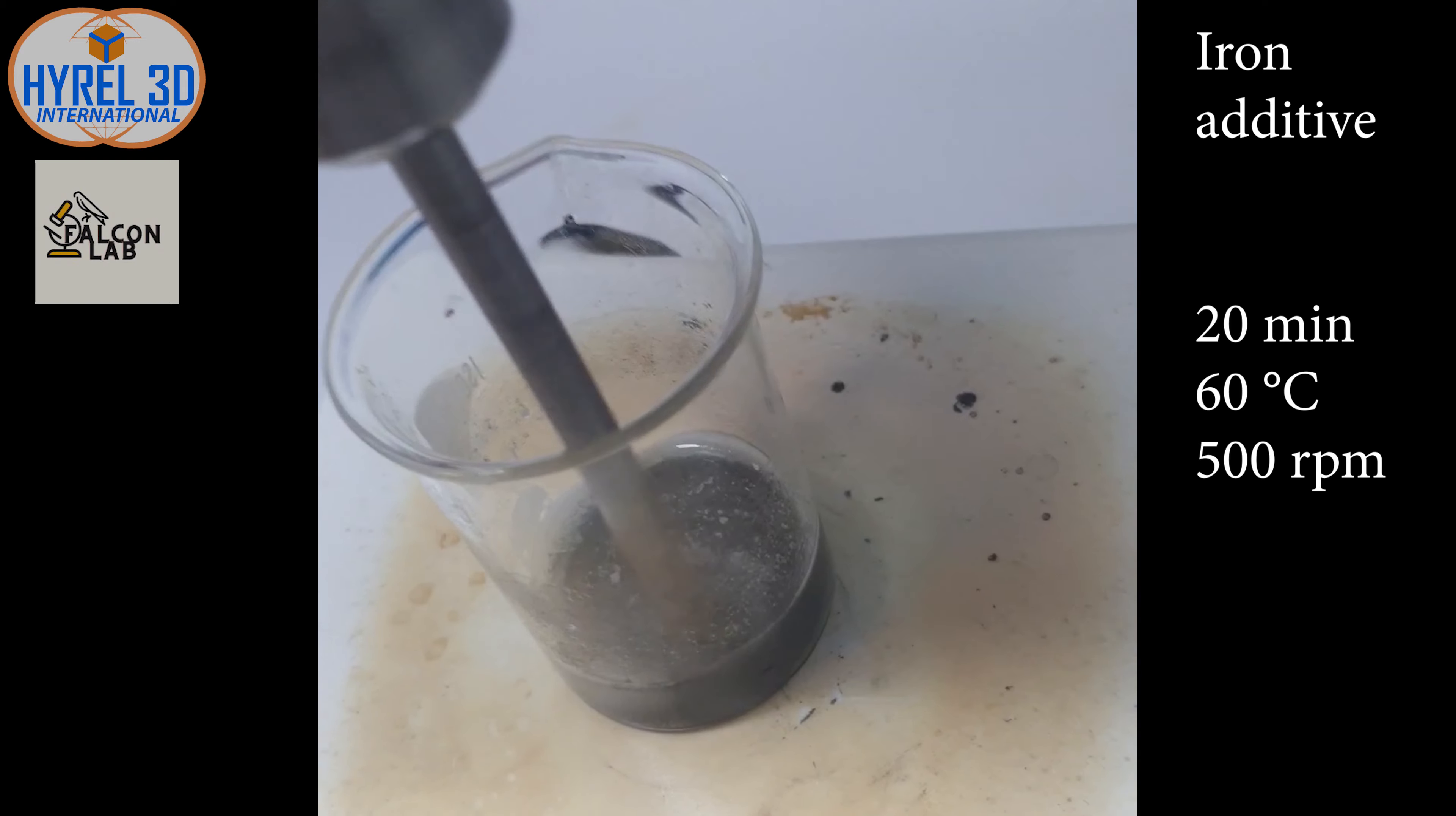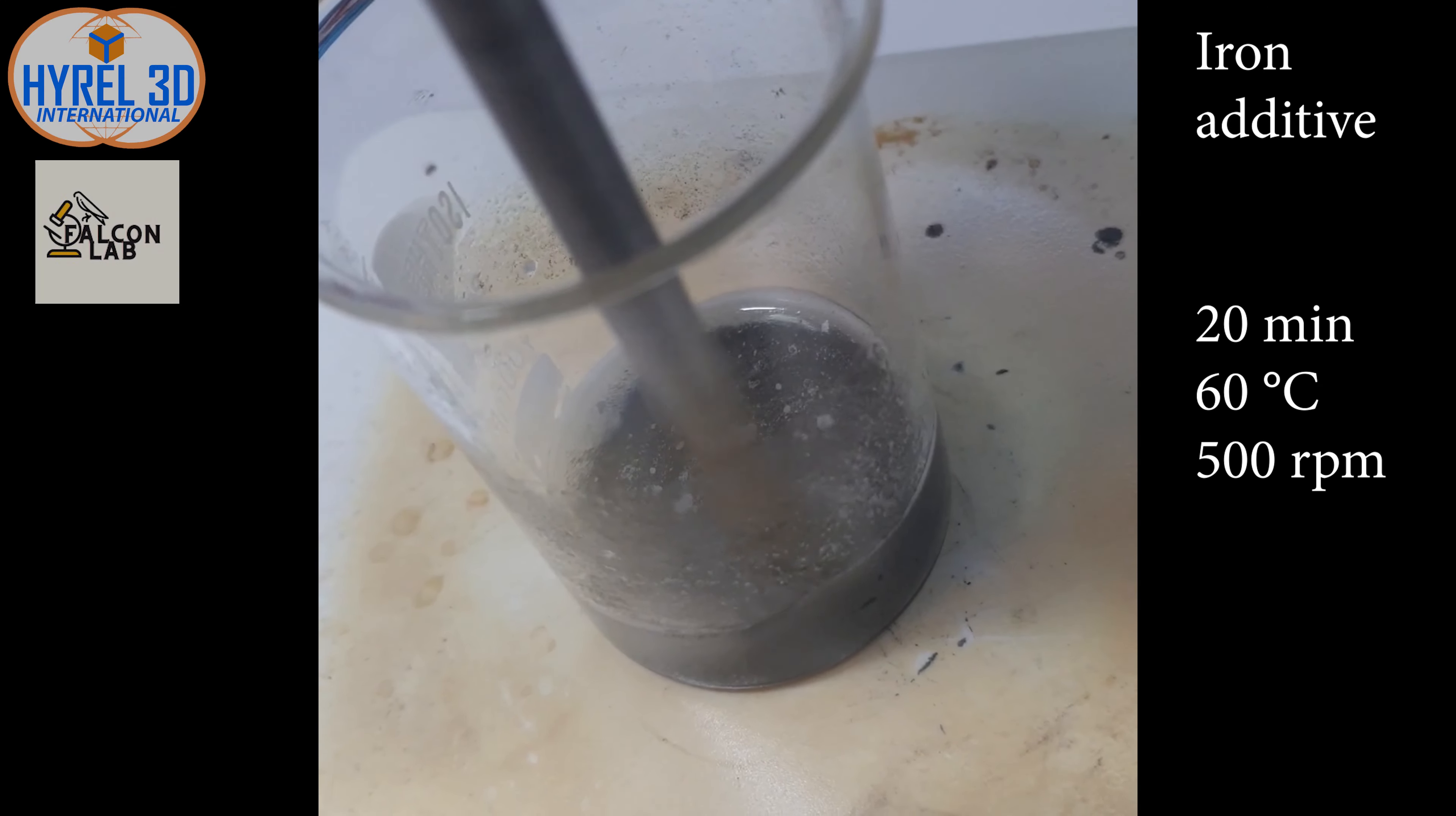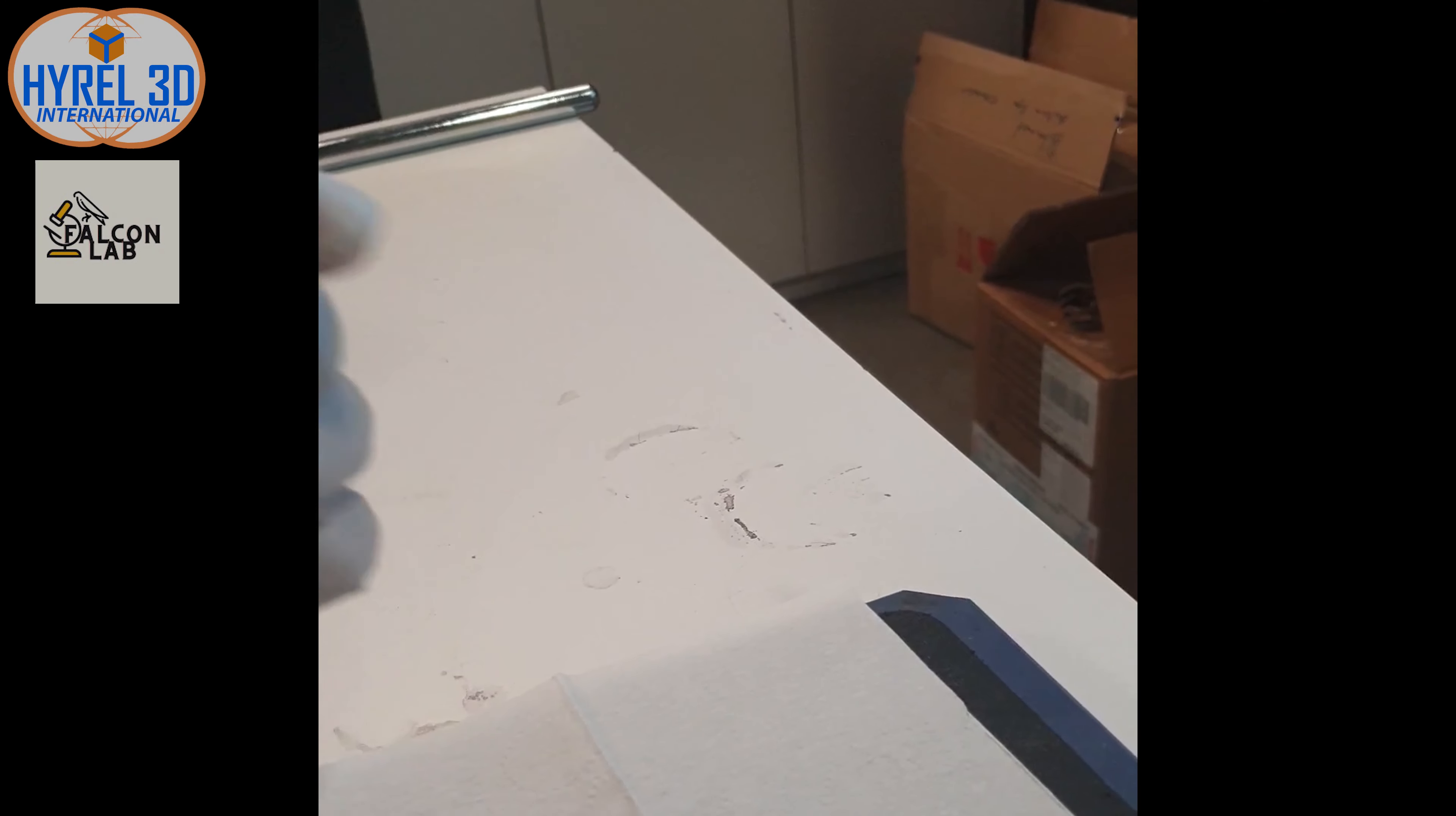We added iron flakes to make up 1% of the total weight, in addition to changing the mixing method from magnetic to mechanical due to iron's magnetic properties. We need at least 20 minutes of mixing to ensure that the iron fillings are spread almost evenly in the hydrogel.